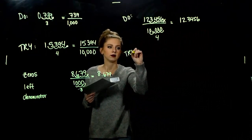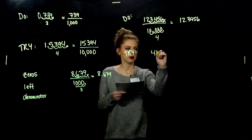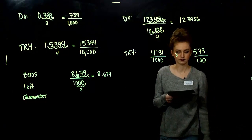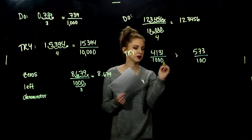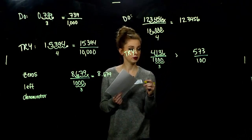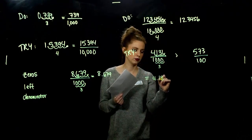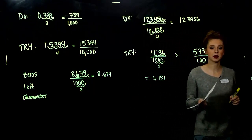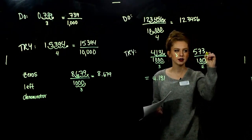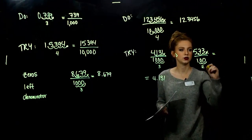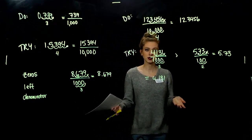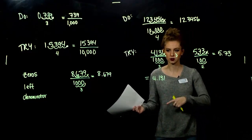As always, we do a few and then you try a few. Convert these two fractions into decimal notation. The first one: how many zeros in the denominator? One, two, three — so I take the decimal point and move it three places to the left, giving 4.131. For the second one: one, two factors of zero in the denominator, so move the decimal two places to the left — that's equivalent to 5.73. Get comfortable converting between the two; we're going to use both notations in different situations.